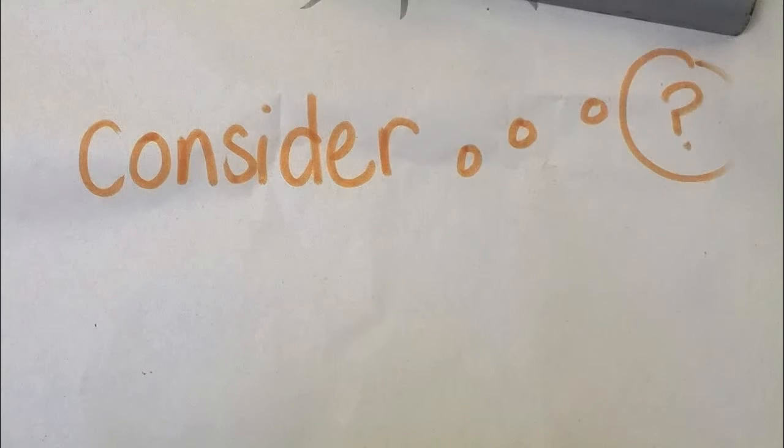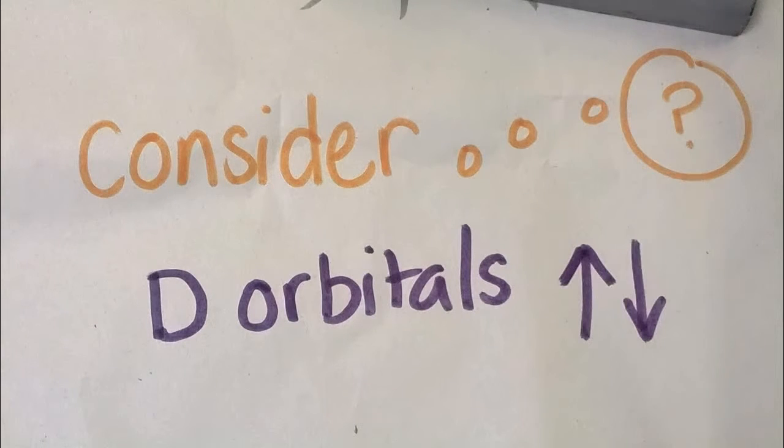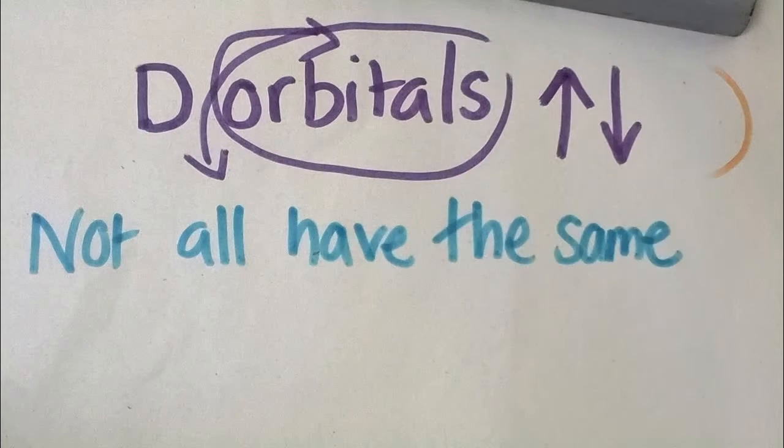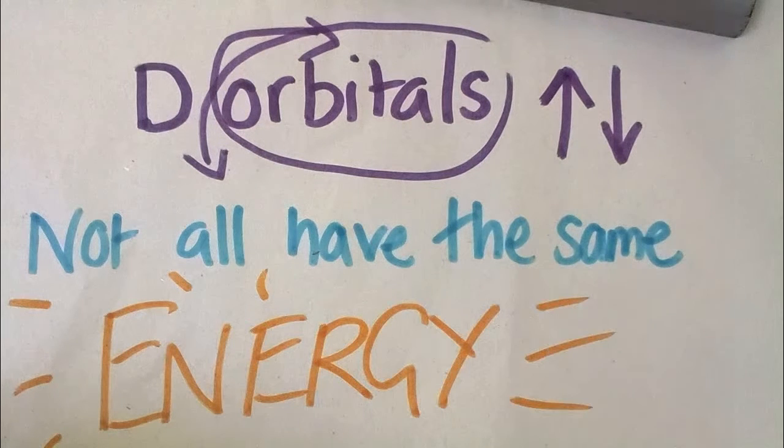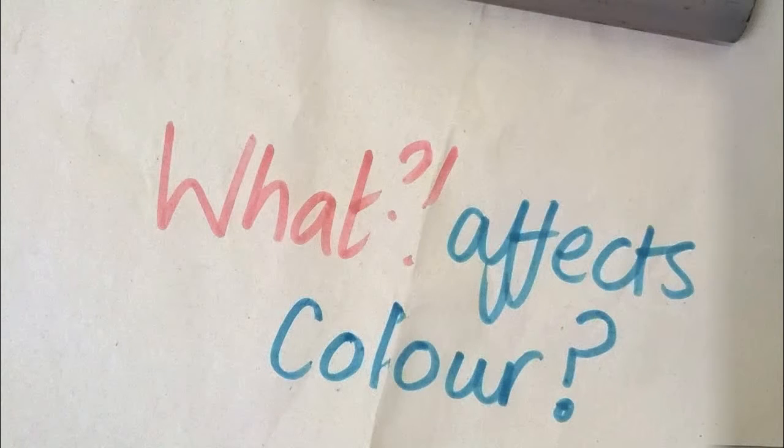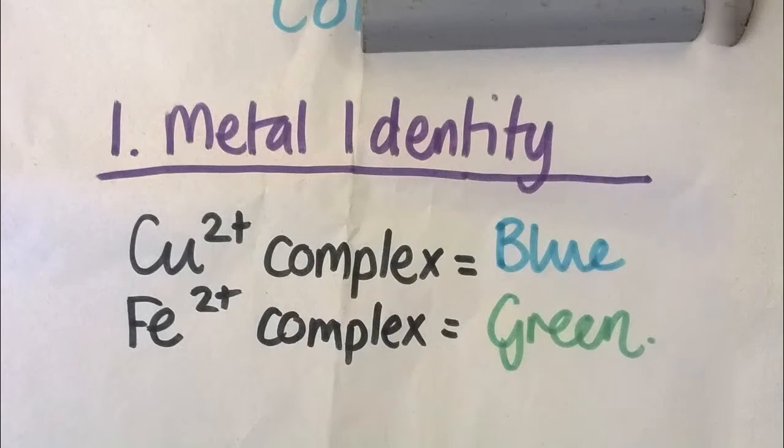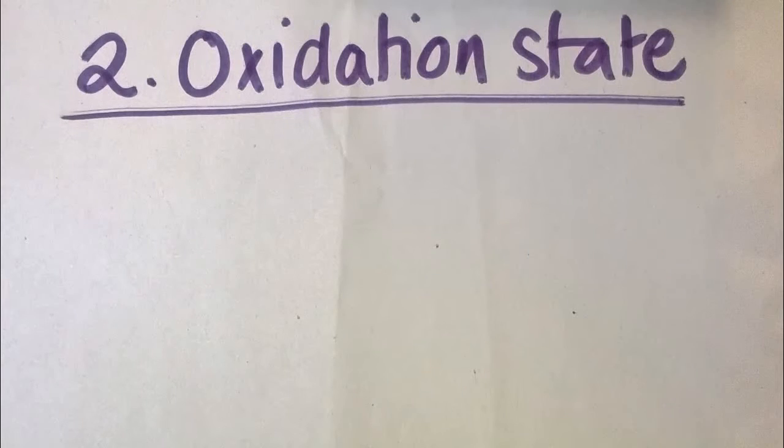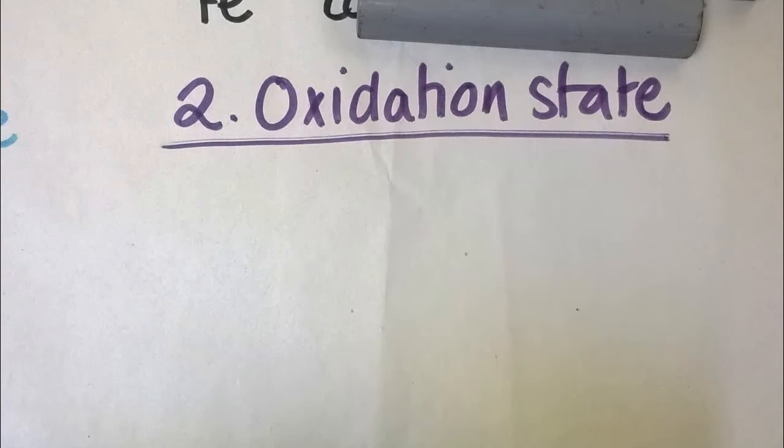She convinces herself she has no choice. What she is isn't no value, so why should she worry if it's given away?